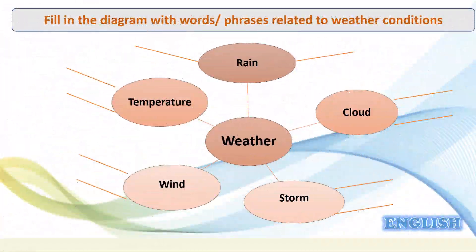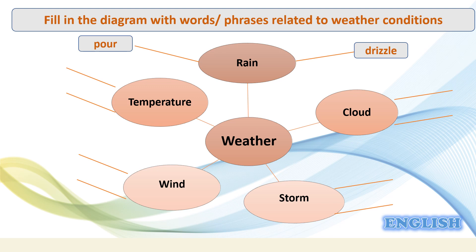Now I'd like you to fill in the diagram with words or phrases related to weather conditions. Starting with the word 'rain': the first word is 'pouring' — when we say it's pouring it means it's raining heavily. The second one is 'drizzling' — to drizzle is the opposite of pouring, which means raining in a light way. Moving on, associated with 'cloud' we have 'gloomy', which means very dark with lots of cloud, and the word 'foggy'.